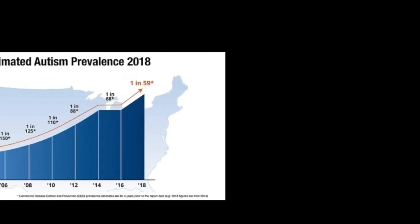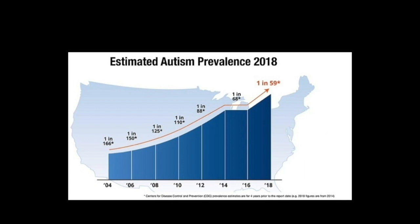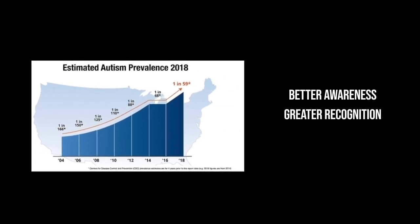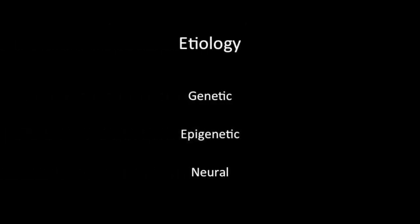Autism used to be considered quite a rare occurrence, but it is now thought of as quite common. According to the CDC, one in 59 children is diagnosed with autism in the United States, with boys being four times more likely to be diagnosed. The increase in prevalence may be due to better awareness, greater recognition amongst clinicians, and the broadening of the definition of autism. Autism is considered a spectrum disorder, meaning symptoms vary from people who need some support to those who need very substantial support.